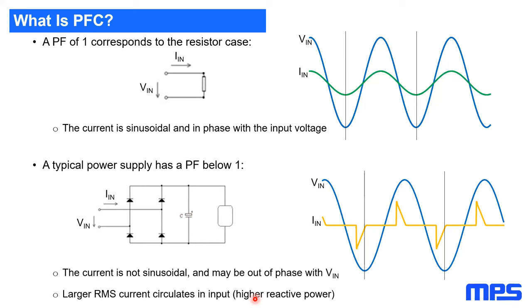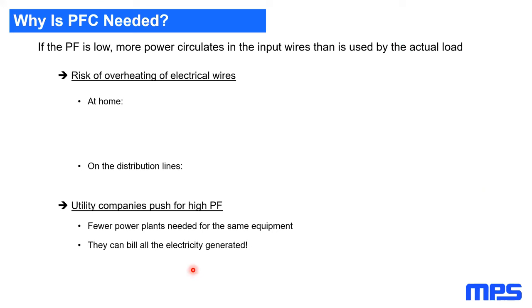Why do we need power factor correction? When the power factor is low, there's more power circulating in the input wires than what is actually used by the load.